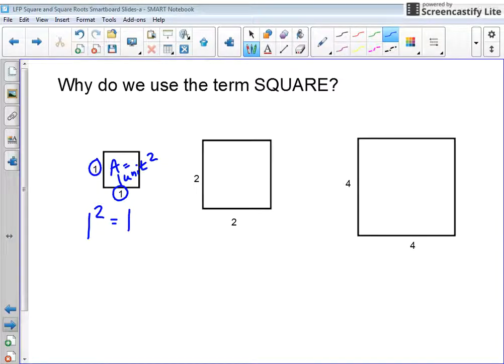And likewise, the area of this middle square would be 2 times 2, which is 4 units squared. And you saw that on your table.